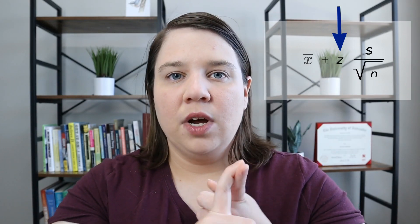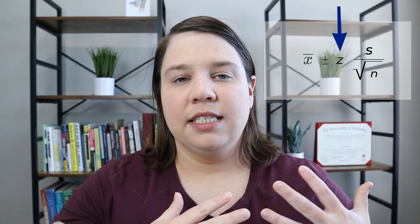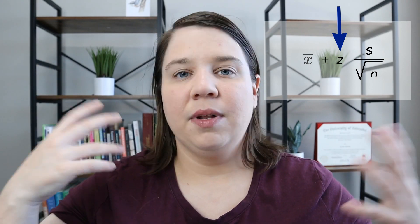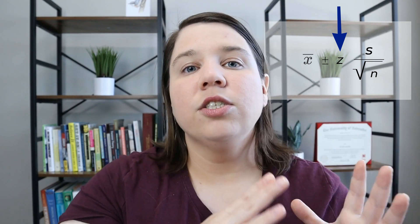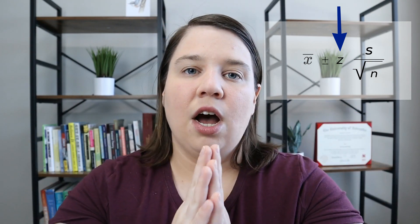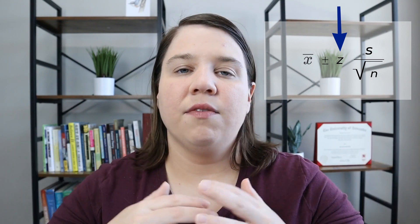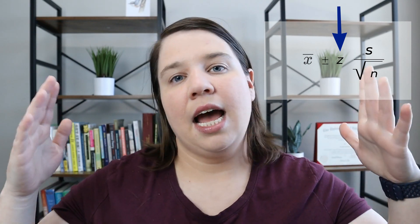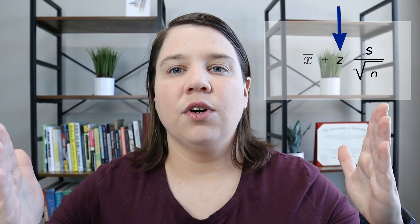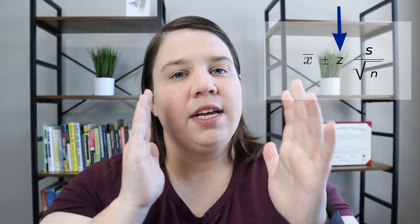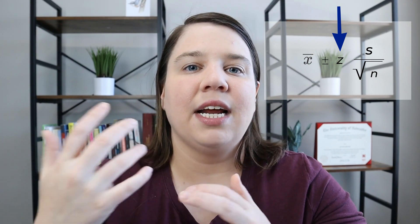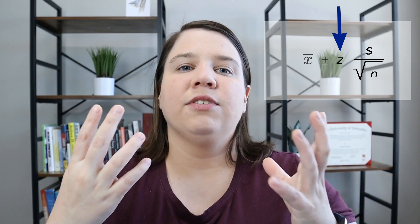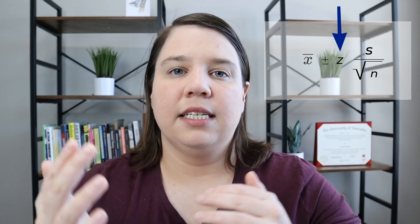The first one is your confidence level. If you decrease your confidence level, you're going to decrease the number that you're adding or subtracting from your mean, giving you a tighter range. But what that also means is you won't be as representative. Going from 99% to 95% gives a smaller confidence interval but you're only representative 95% of the time versus 99%, so it really matters what type of study you're doing.